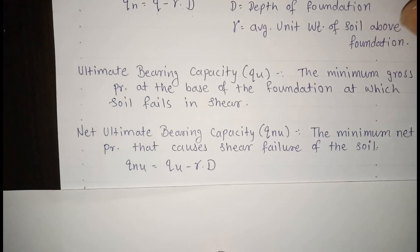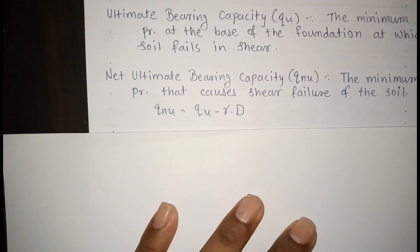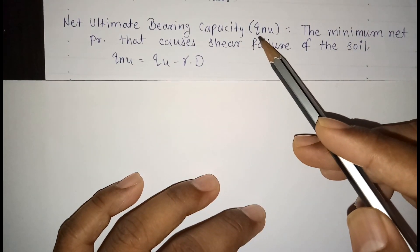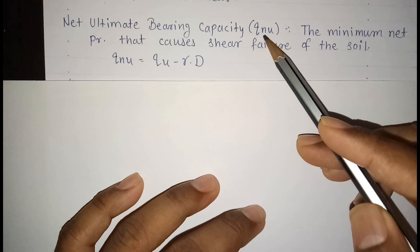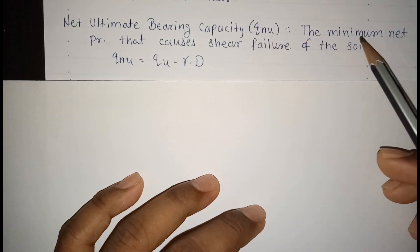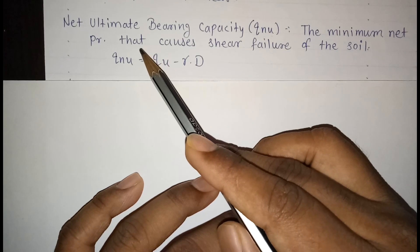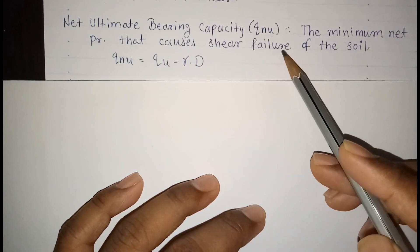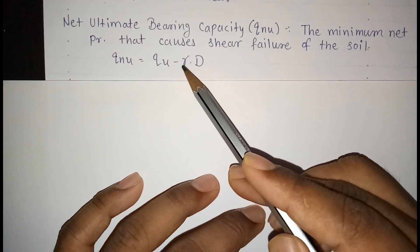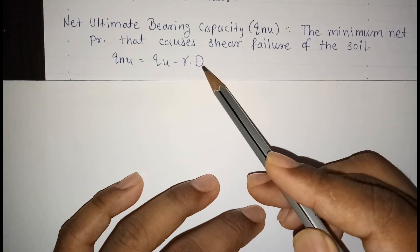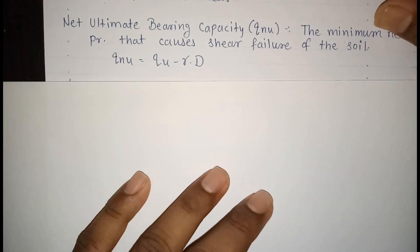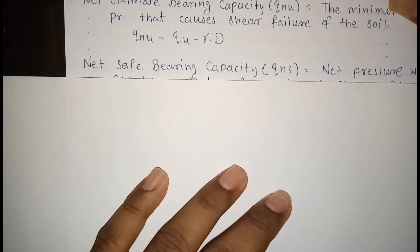The next definition is net ultimate bearing capacity, denoted by QNU — N for net, U for ultimate. It is the minimum net pressure that causes shear failure of the soil. QNU is equal to QU minus γD, where γD is the overburden pressure.